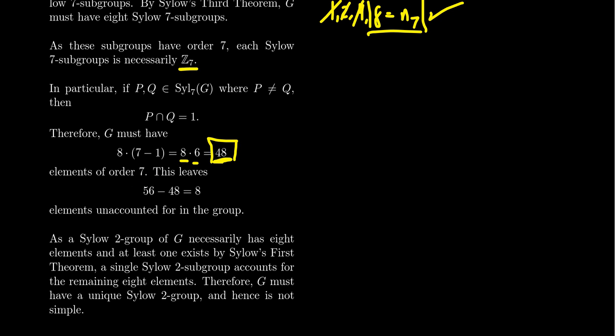Well, let's consider the Sylow 2 subgroup for a moment. Remember, 56 is equal to 2 cubed times 7. So a Sylow 2 subgroup is going to contain 8 elements. And we know by Sylow's first theorem that there is a Sylow 2 subgroup.